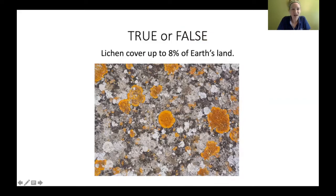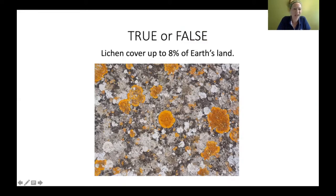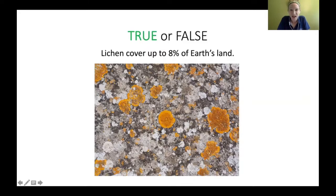Last true or false: lichen cover up to eight percent of the Earth's land. The answer is true. Some estimates range from six to eight percent — lichen cover a lot of the Earth's land and are found all over the place. Someone asked how researchers tell how old lichen are — we'll go over that a little later.